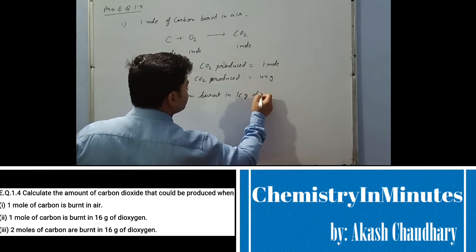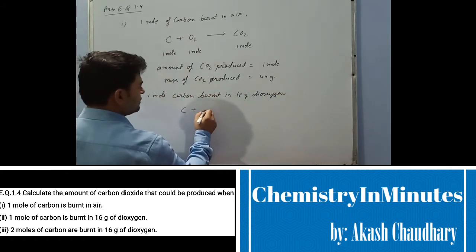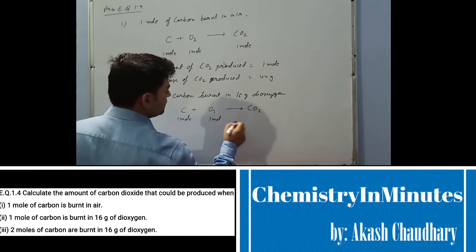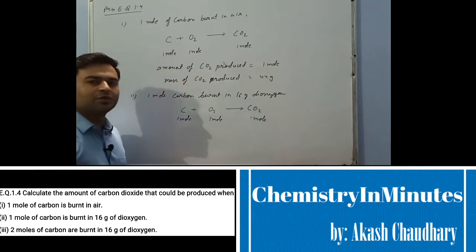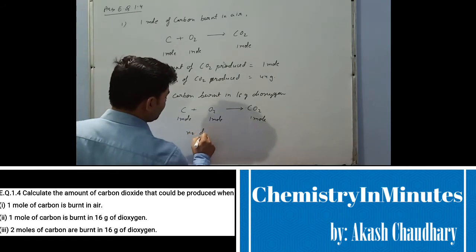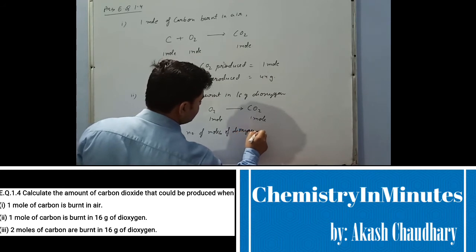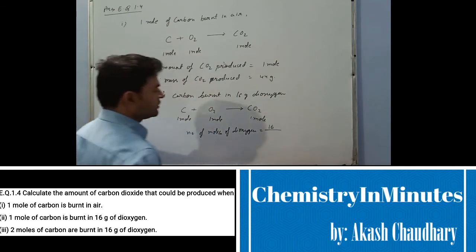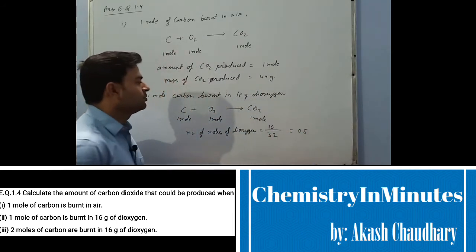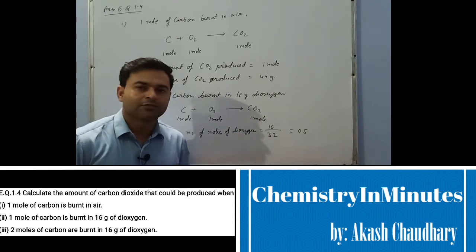For the second part — one mole of carbon burnt in 16 gram dioxygen — the reaction is again C + O₂ → CO₂. For one mole of carbon, one mole of oxygen is required and one mole of CO₂ will be produced. The number of moles of dioxygen available is: mass divided by molar mass = 16 ÷ 32 = 0.5 moles. So 0.5 mole of oxygen would react with 0.5 mole of carbon and produce 0.5 mole of CO₂.